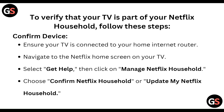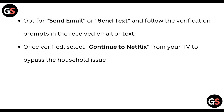Navigate to the Netflix home screen on your TV and select 'Get Help', then click 'Manage Netflix Household'. Choose 'Confirm Netflix Household' or 'Update My Netflix Household'. Select 'Send Email' or 'Send Text', then follow the verification prompt in the received email or text. Once verified, select 'Continue to Netflix' from your TV to bypass the household issue.